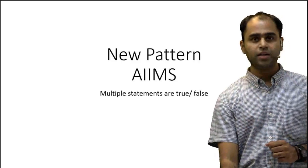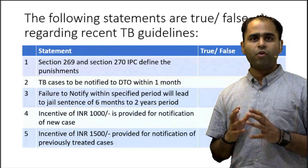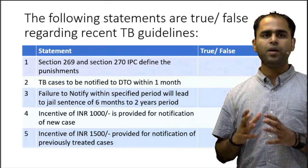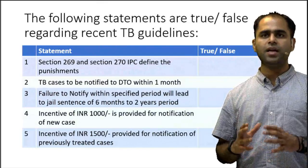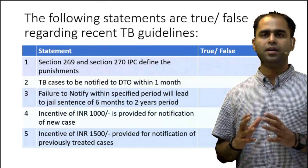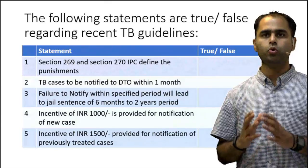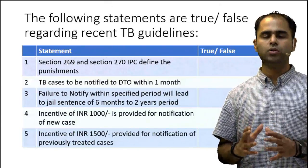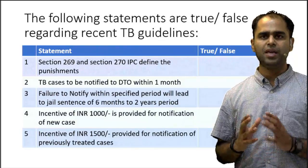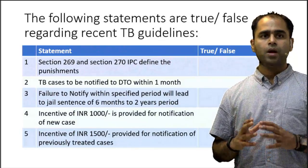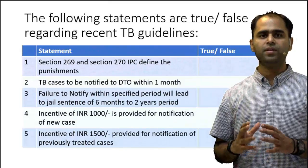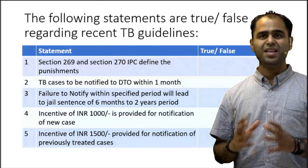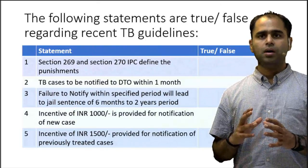Let us look into this question: the following statements are true or false regarding the recent TB guidelines. Statement 1: Sections 269 and 270 IPC define the punishment — yes, absolutely true. Option 2: TB cases to be notified to the district tuberculosis officer within one month — yes, this is also true. Option 3: Failure to notify within the specified period will lead to a jail sentence of 6 months to 2 years — yes, this is true.